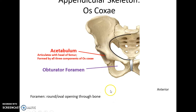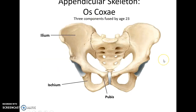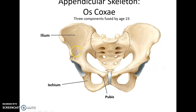This socket found in the os coxae is called the acetabulum — it helps form the hip joint with the femur. This large hole is called the obturator foramen. The os coxae is actually three different bones that fuse as we become adults. Before they fused, they were known as the ilium, the ischium, and the pubis. We still name those regions of the os coxae by those names.